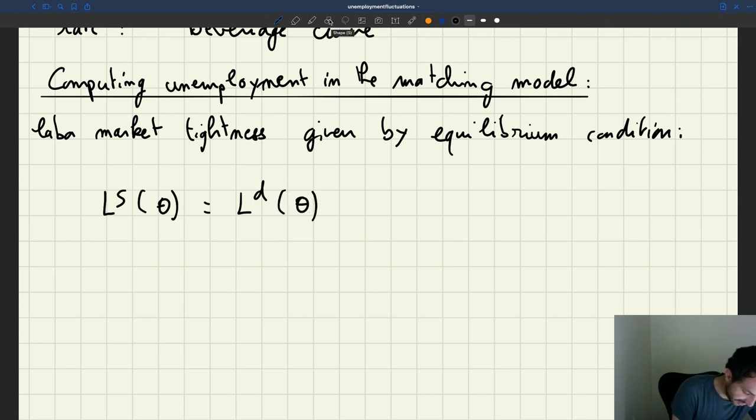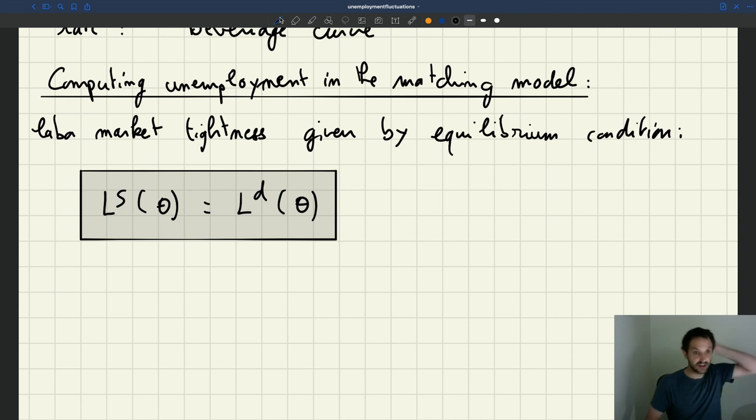It's that the labor supply at theta has to be equal to the labor demand at theta. So this is a key relationship that you have to remember. Let me highlight that. So that's the key equilibrium condition. Labor supply is equal to labor demand at the given tightness. So this is something that's going to give us our equilibrium tightness, and that's what we expect to prevail on the labor market.